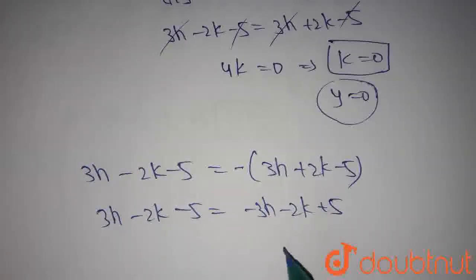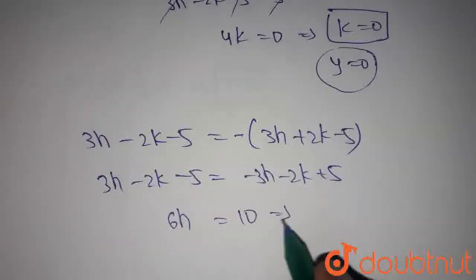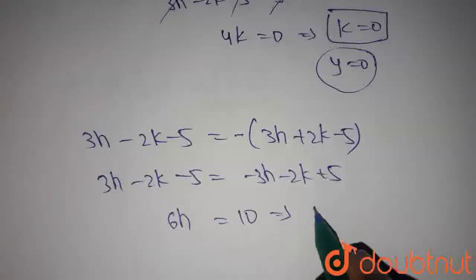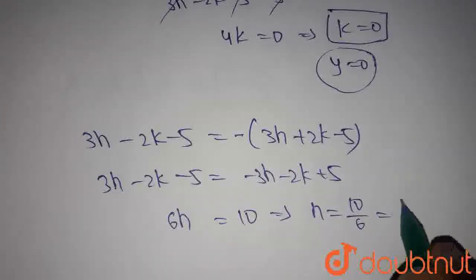-2k and -2k cancel out each other. Then we get 6h=10, so h=10/6, which is 5/3.